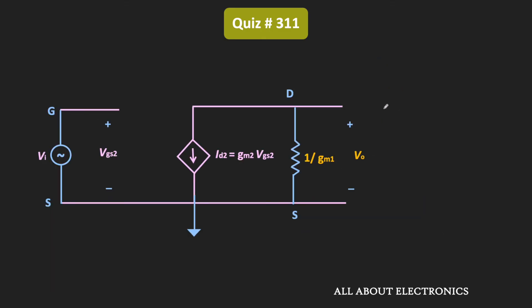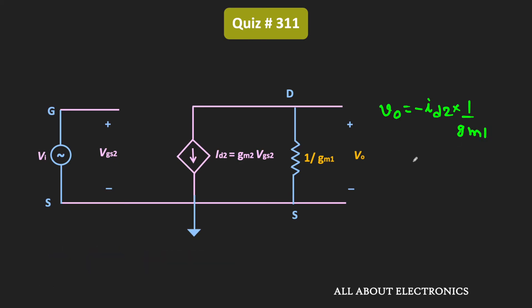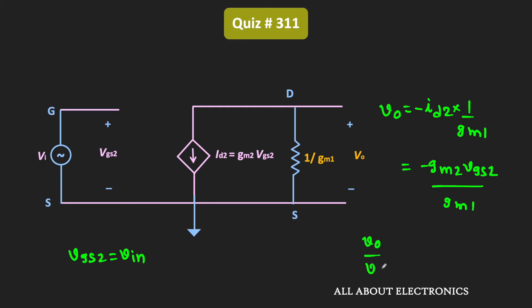For this circuit, the output voltage Vout is equal to minus Id2 times 1 over Gm1, or equivalently minus Gm2 times Vgs2 divided by Gm1. Since Vgs2 is equal to the input signal Vin, the voltage gain Vout divided by Vin is equal to minus Gm2 divided by Gm1. So the voltage gain of this amplifier circuit is minus Gm2 over Gm1.